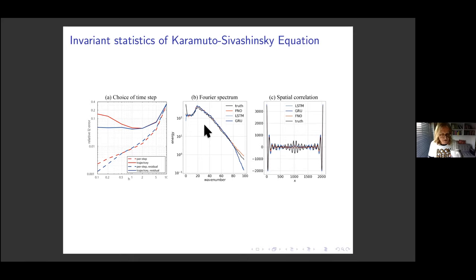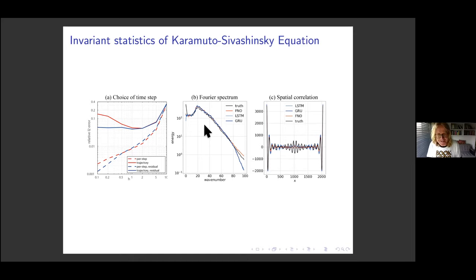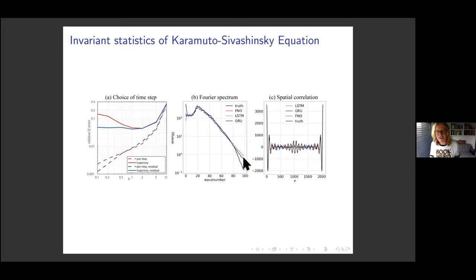On the spectral gradient in the Fourier spectrum: the truth is computed by a very high-resolution spectral method in space using exponential time differencing, which uses the exact solution of the linear operator, so the truth is very accurate. The exact slope value is something to look up — apologies for not knowing it off the top of my head.